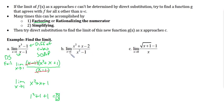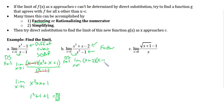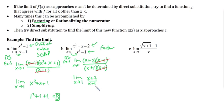For the next rational function, plugging in 1 gives 0 in the denominator, so direct substitution fails. We factor both the numerator and denominator, then cancel the (x − 1) terms. We're left with the limit as x approaches 1 of (x + 2)/(x + 1). Plugging 1 into the denominator gives 2, so c is in the domain. Direct substitution gives (1 + 2)/(1 + 1) = 3/2.